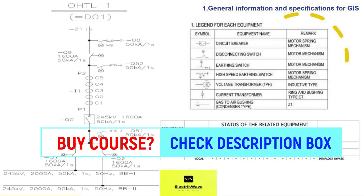Here we will understand the typical single line diagram, sequence of equipments, rating of equipments, and we will also discuss interlock of equipments for line bay.